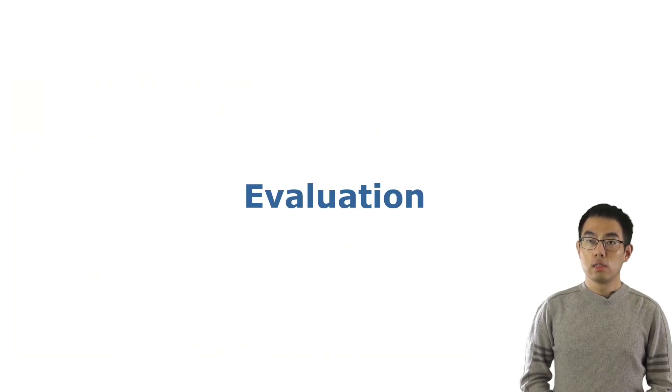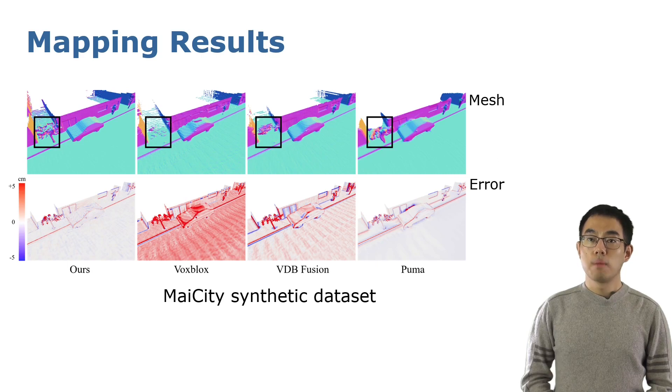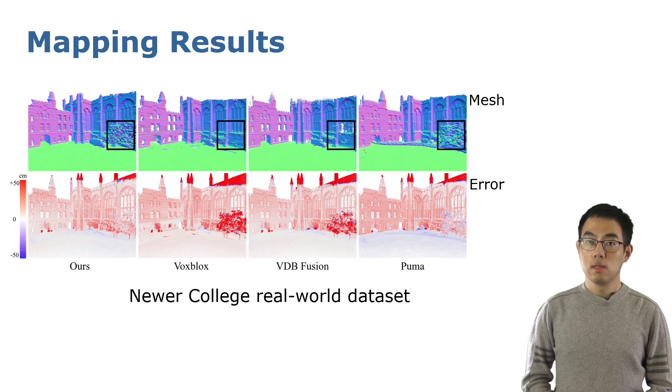For the evaluation, we calculate the chamfer distance between our result and ground truth mesh. We compared our results with several methods like voxel-based methods, Voxblox, VDBFusion, and Poisson reconstruction-based method, PUMA. As shown, our result's error is less than others on synthetic dataset, and also on noisier real-world dataset.